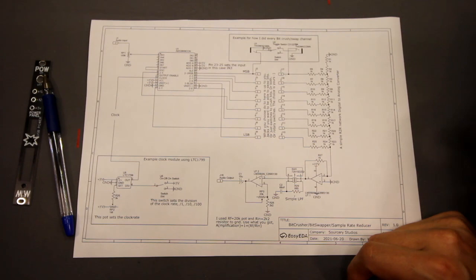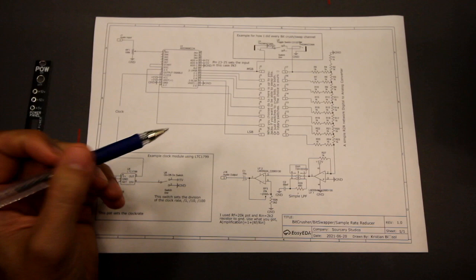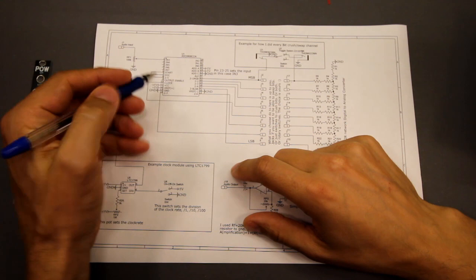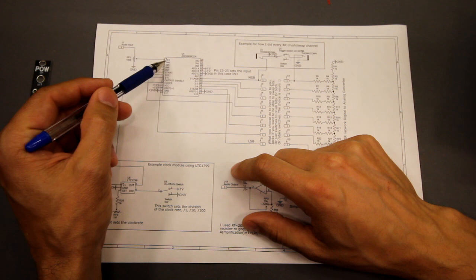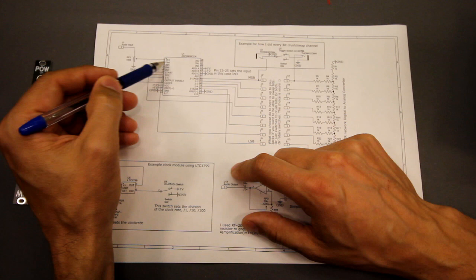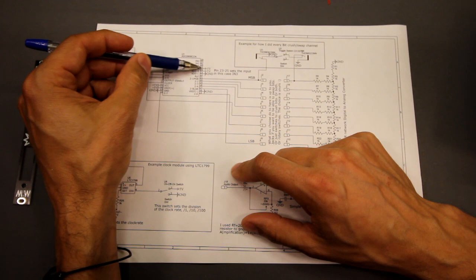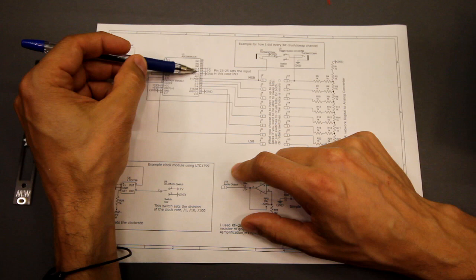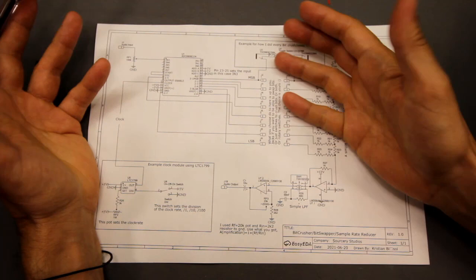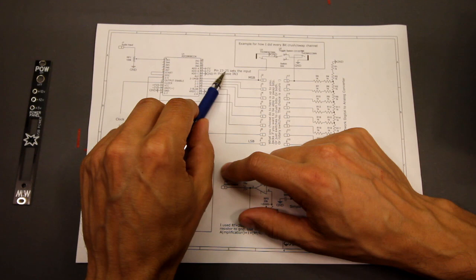And for this I've also made the schematics. And because there's a lot going on I've simplified it a bit. So here's the ADC 0809 where the audio input comes in on input 3. And the input is dependent on these here, the ADD A, B and C. So these are the address pins of which input we're using. So by connecting them A to plus 5, B to plus 5 and C to ground you get input 3. So that's the reason for that, which is also explained here. Pin 23 to 25 sets the input.